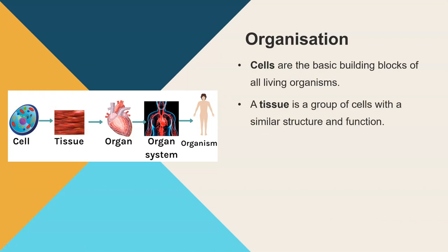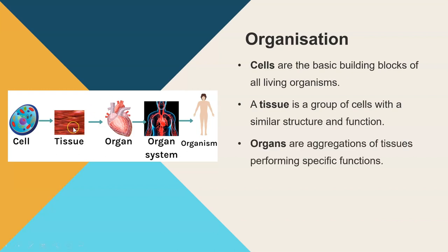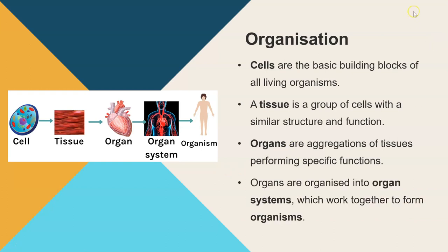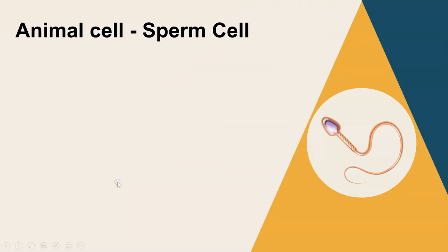A tissue is a group of cells with a similar structure and function. Tissues work together to make an organ - organs are aggregations or groups of tissues performing a specific function. Organs are then organized into organ systems. We can see in this diagram the circulatory system, which is made up of the heart and then arteries, veins, and capillaries. Lastly, the entire organism is made up of lots of organ systems - that is what we mean by organization.